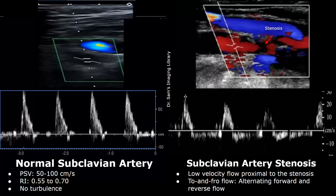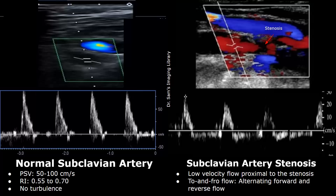At this point, the velocity is between 20 and 30 centimeters per second, which is lower than the normal range. There is also to and fro flow — that is alternating forward and reverse flow. The flow above the baseline is the forward flow, and the flow below the baseline is the reversed flow.